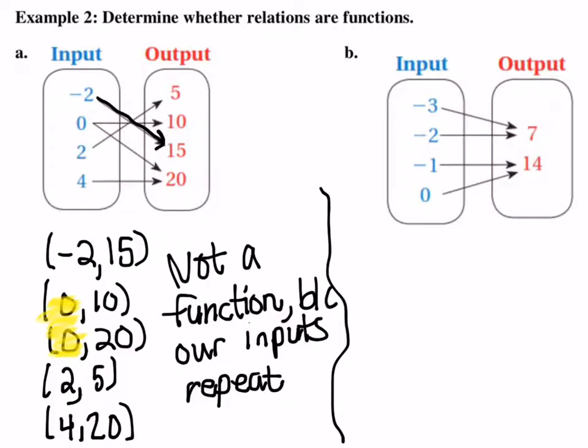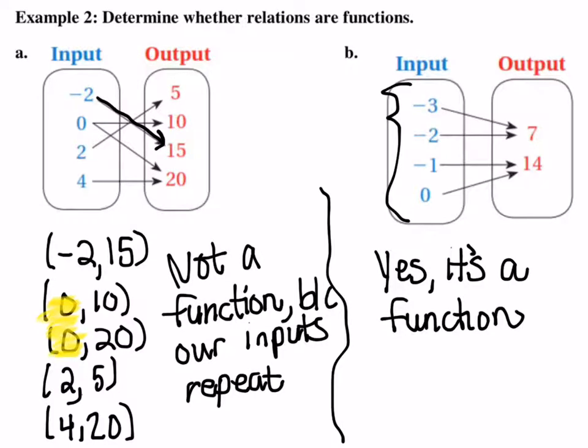We're going to do the same thing for part B here. Now, instead of drawing my ordered pairs this time, let's look at our arrows. So does my input go to more than one output? Well, negative 3 just goes to 1. My negative 2 goes to the 7. My negative 1 goes to the 14. And my 0 goes to the 14. So none of these X's repeat. So yes, it's a function. That's all you're going to be expected to do there.